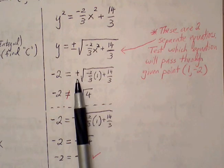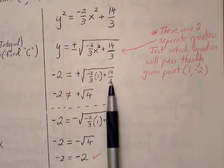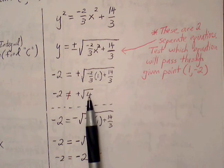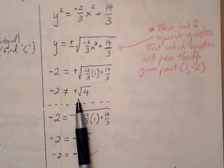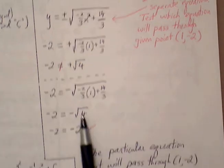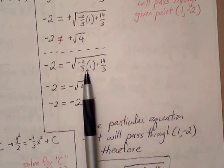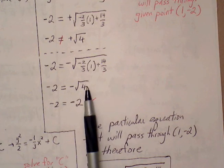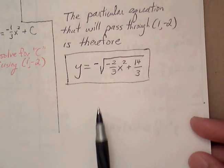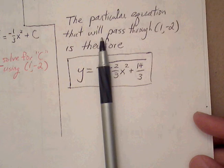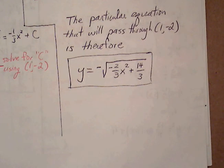Let's plug in the positive version first. 1 goes in for x, negative 2 goes in for y. The inside reduces to 12/3, which is 4, and the positive square root of 4 is 2 — but that's not equal to negative 2. So the positive square root function does not pass through (1, negative 2). Testing the negative version: plugging in 1 for x and negative 2 for y, the inside reduces to positive 4, square root of 4 is 2, and negative 2 does equal negative 2. So the particular solution is y equals negative square root of negative 2/3 x squared plus 14/3.